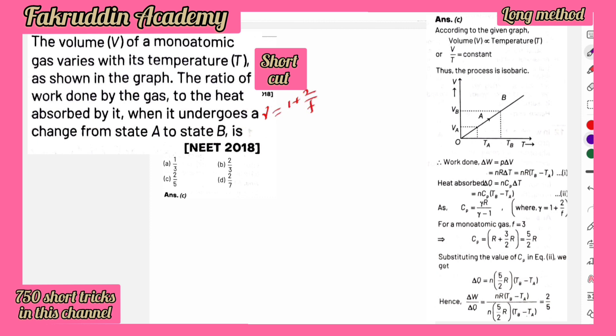You all know that for monoatomic molecule, gamma is equal to 1 plus 2 by f. As gamma is equal to 1 plus 2 by f and degree of freedom is going to be 3, therefore gamma is equal to 1 plus 2 by 3, so gamma is equal to 5 by 3. So we got the value of gamma here.